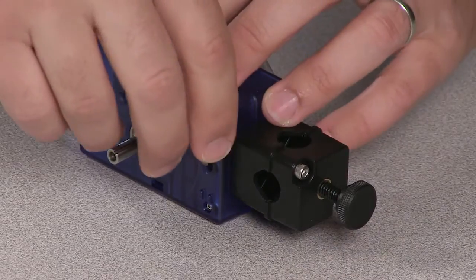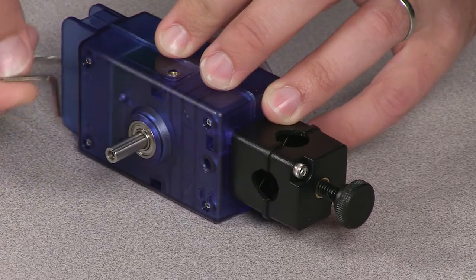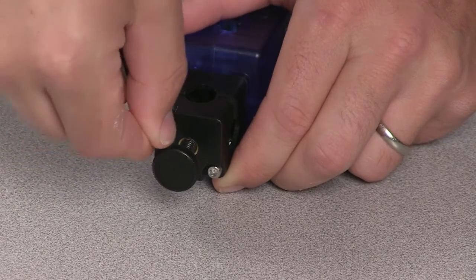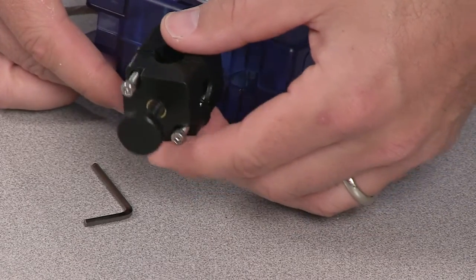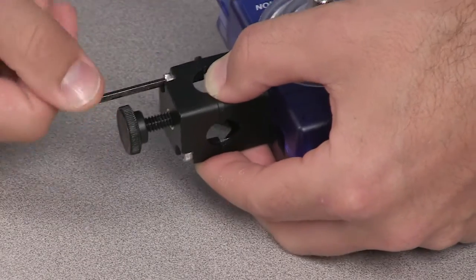To adjust the rod clamp, use the Allen wrench stored in the back of the sensor case to loosen the two screws that hold the clamp on the sensor. Move the rod clamp to any of the additional mounting positions and use the wrench to tighten the screws in place.